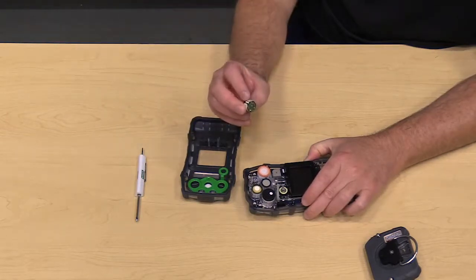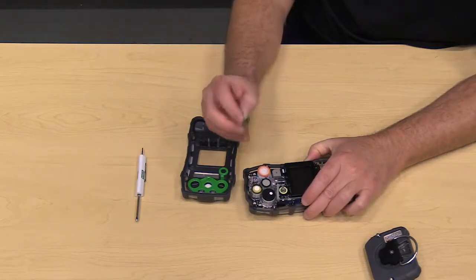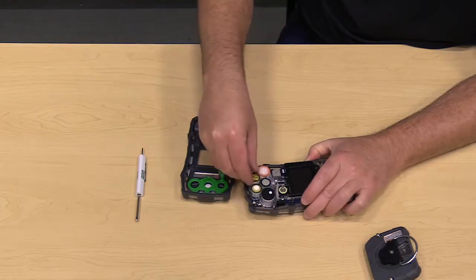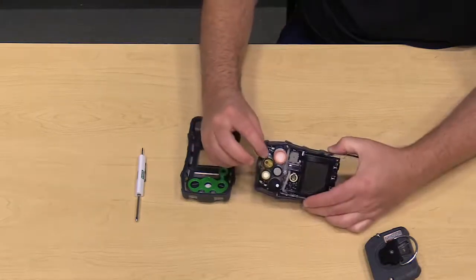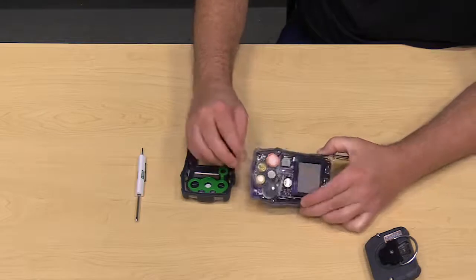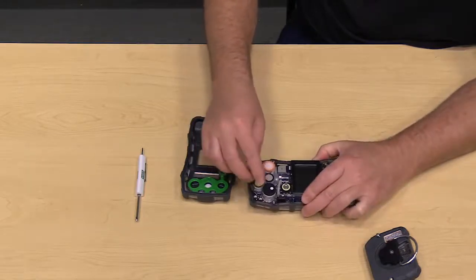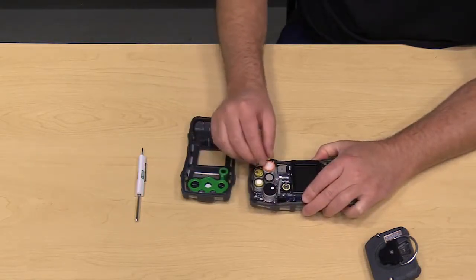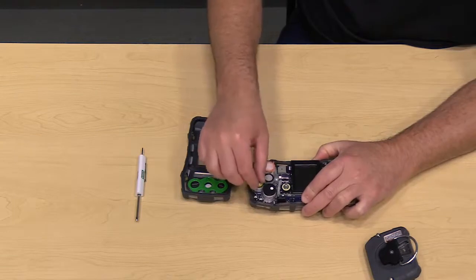Note that the sensors themselves are physically keyed so they fit in that slot in only one manner. We want to make sure the pins are lined up underneath, push that sensor into place, and check that the other ones are snug.